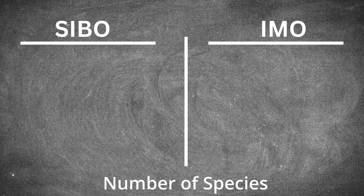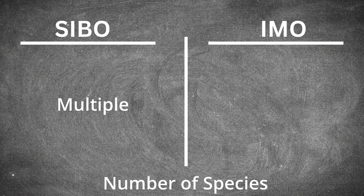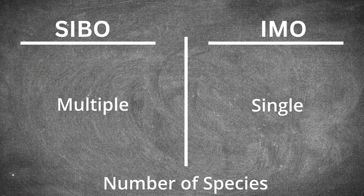When it comes to the number of species present during these overgrowths, when you're looking at SIBO, there are generally multiple species — it's not one single organism that you're typically finding. Whereas when we talk about IMO, it's the Methanobrevibacter smithii — it's that one organism. That's typically the one you're up against.